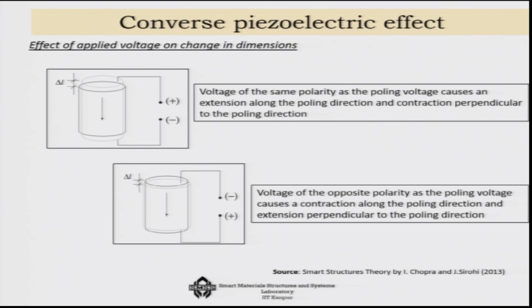For the converse piezoelectric effect: when voltage of the same polarity as the poling voltage is applied, it causes an extension in the system. If voltage of the opposite polarity to the poling voltage is applied, it creates a compression in the system. These sign conventions for both converse and direct effects must be kept in mind.